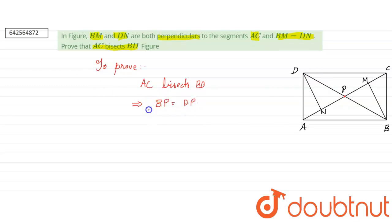This is what we have to prove. How do we prove that? By showing the triangles containing those sides are congruent. So let us see what the congruency here is. We have DN equals BM as they already gave in the question.